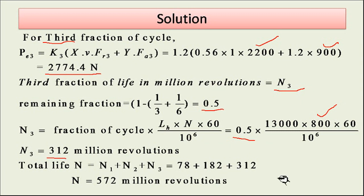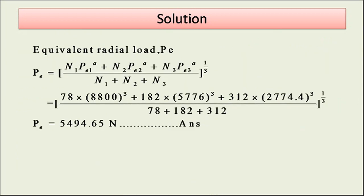Let us make use of all N1, N2, N3 and Pe1, Pe2, Pe3 to get the equivalent radial load. I am writing N1 × Pe1^a - because it is a ball bearing, a equals 3.